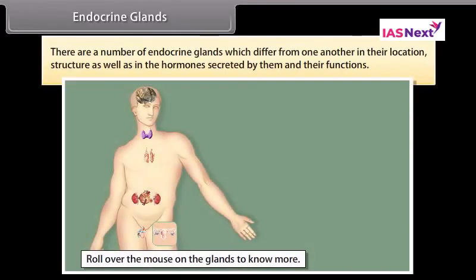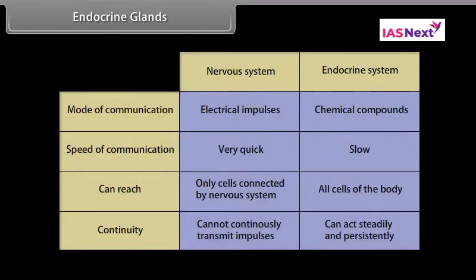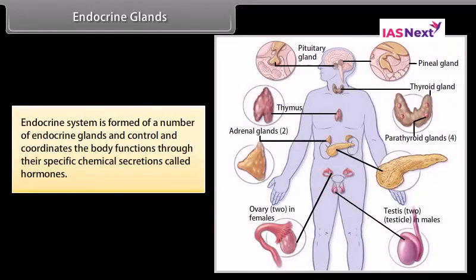Endocrine glands: There are a number of endocrine glands which differ from one another in their location, structure, as well as in the hormones secreted by them and their functions. The endocrine system is formed of a number of endocrine glands and controls and coordinates the body functions through their specific chemical secretions called hormones.